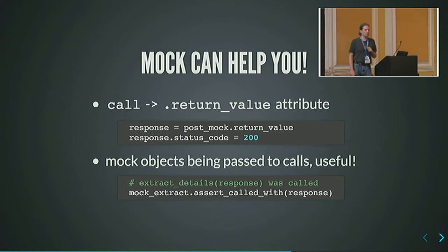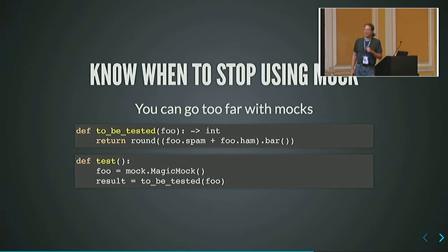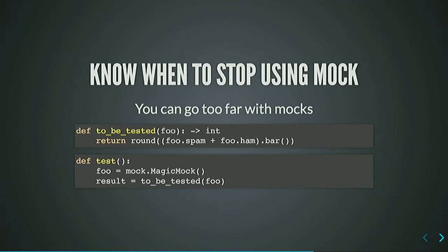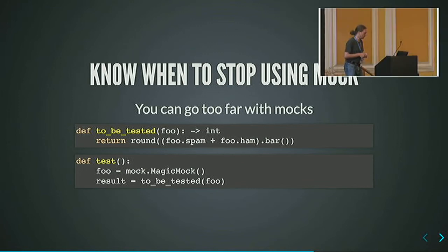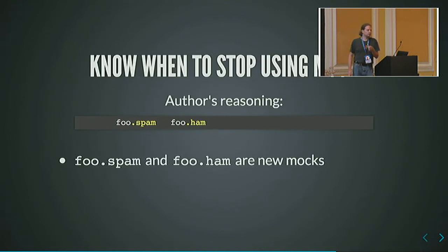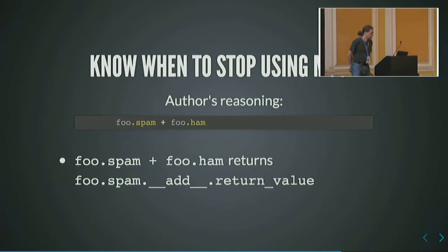You may have gone overboard a little with mocking. Sometimes people definitely do that. I came across this recently — a question on Stack Overflow where someone had custom objects with attributes and methods, and the whole result was producing a floating point number they wanted to return as an integer. They started the test by passing in a MagicMock. It didn't quite work. What they were trying to do: foo.spam and foo.ham are attributes, so those are new mock objects.